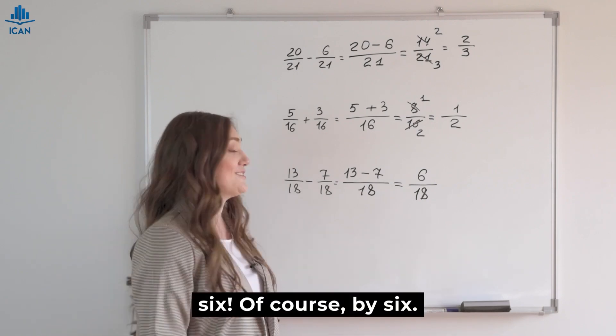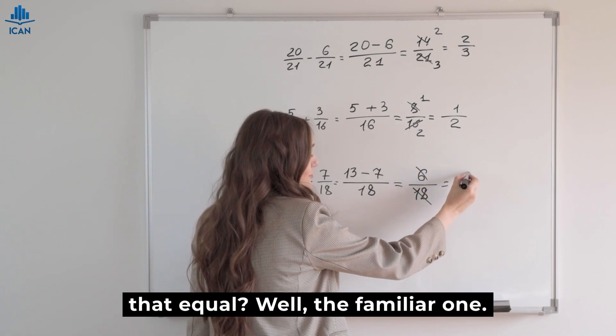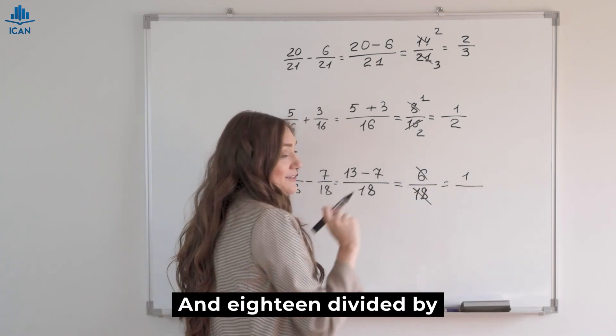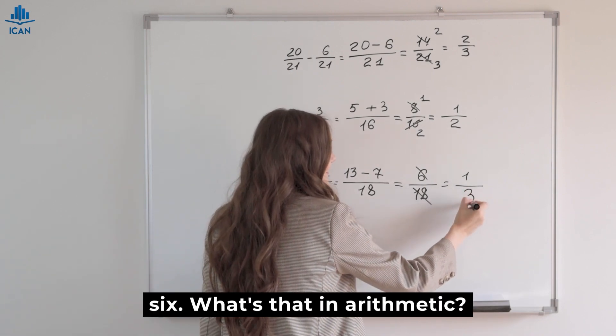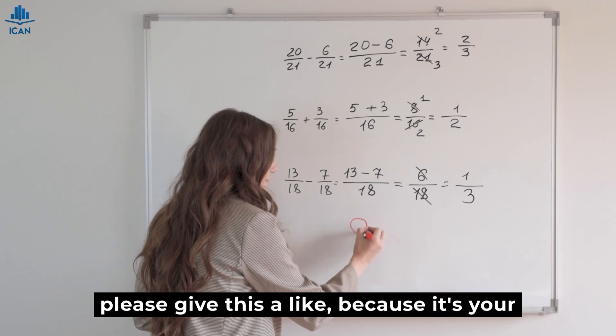What can 18 and 6 be divided by to simplify? By 6 of course. By 6 we divide 6 by 6, what does that equal? Well the familiar one. And 18 divided by 6, what's that in arithmetic? Well 3. 1/3.